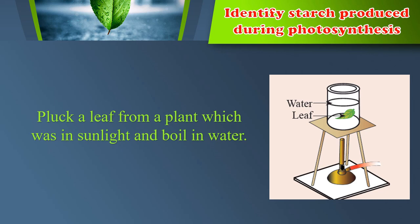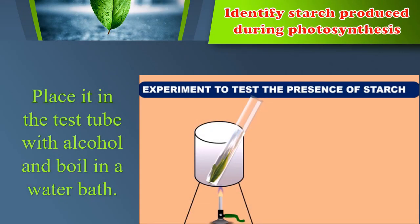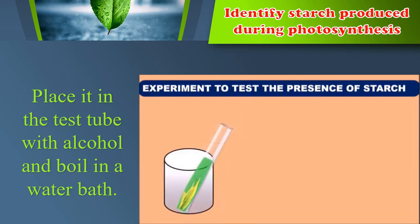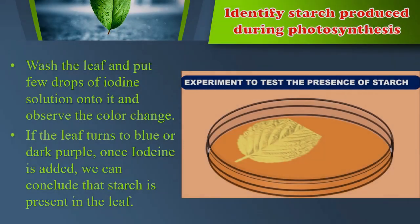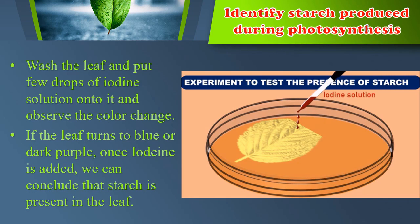Experiment to identify starch produced during photosynthesis. Pluck a leaf from a plant which was in sunlight and boil it in water. Then place it in a test tube with alcohol and boil in a water bath.